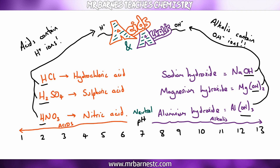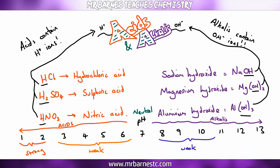A strong acid is going to be around pH 1 to 2. A weaker acid will be between pH 3 and 6. Similarly with alkalis, pH 8 to around 10 is weak, and pH 11 and above is strong.